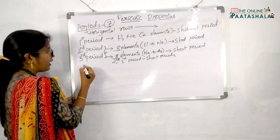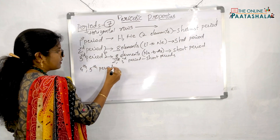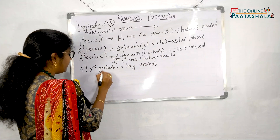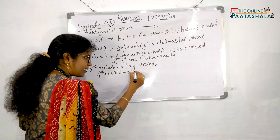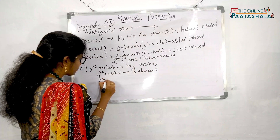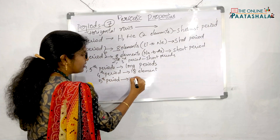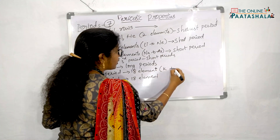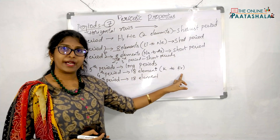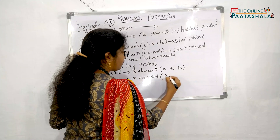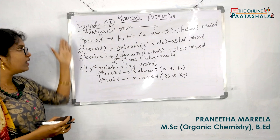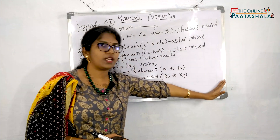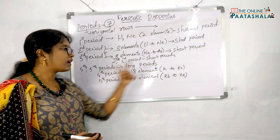The 4th and 5th periods are called long periods. The 4th period has 18 elements, starting from potassium to krypton. The 5th period also has 18 elements, starting from rubidium to xenon. You can identify the first and last elements by looking at the left and right sides of the periodic table.